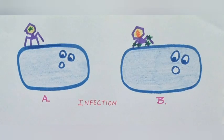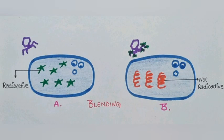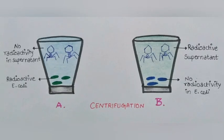Then radioactive bacteriophages were allowed to attach to E. coli bacteria. As the infection proceeded, the viral coats were removed from the bacteria by agitating them in a blender. The virus particles were then separated from the bacteria by spinning them in a centrifuge.